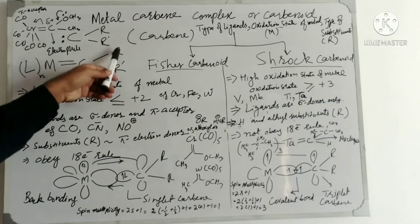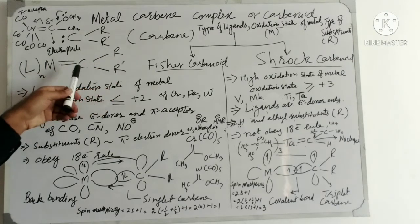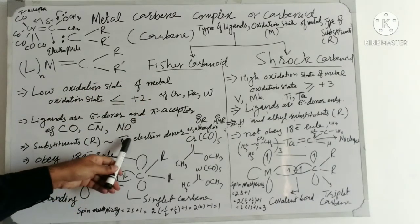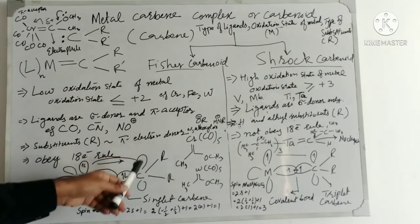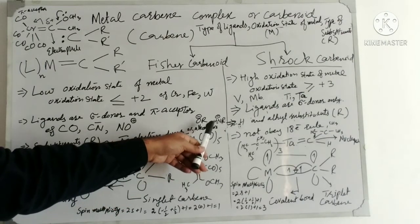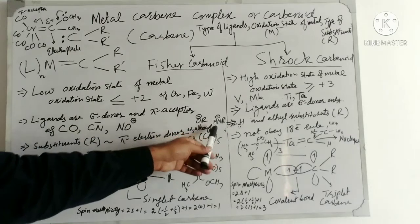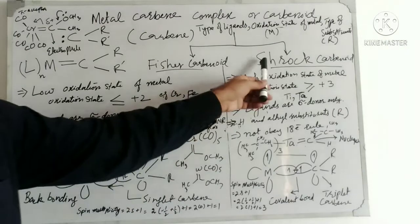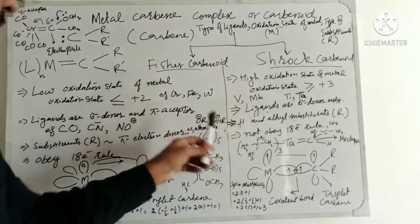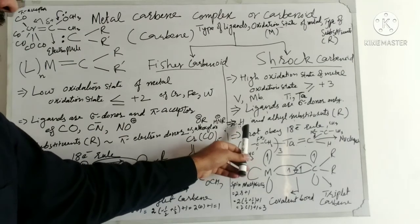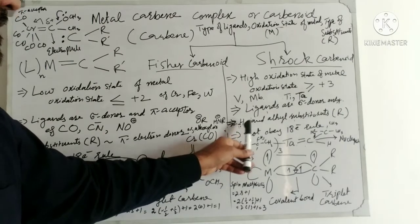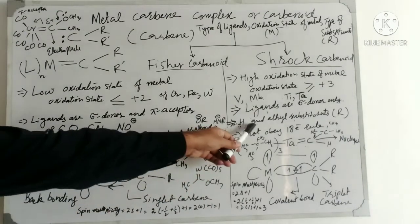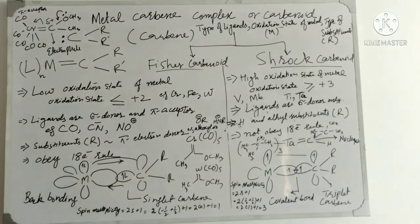Now, talking about the substituents attached to the carbene carbon: in the case of Fischer Carbenoids, the substituents are pi electron donors — for example, alkoxy or amino alkyl groups. They are pi electron donors. Whereas in the case of Schrock Carbenoids, the substituents attached to the carbene are hydrogen and alkyl substituents — non-pi electron donors.